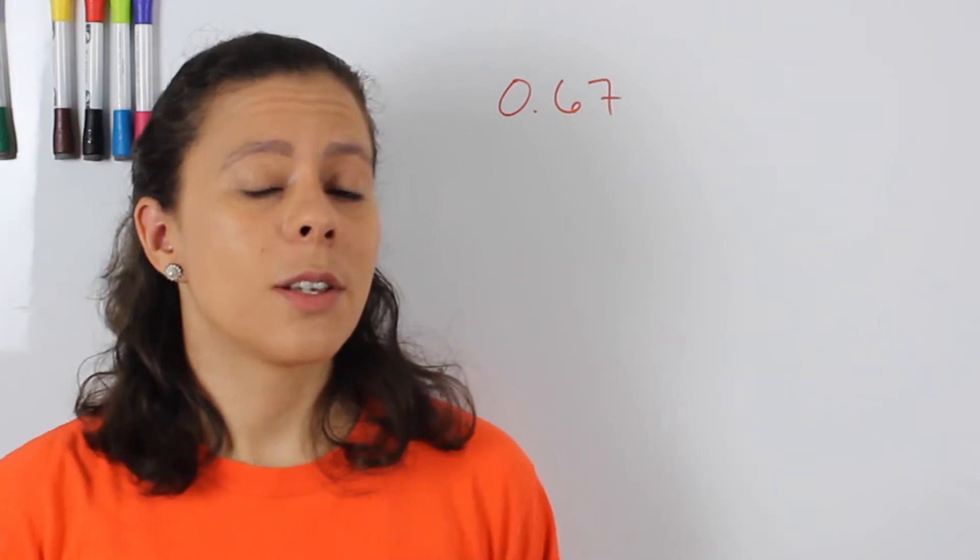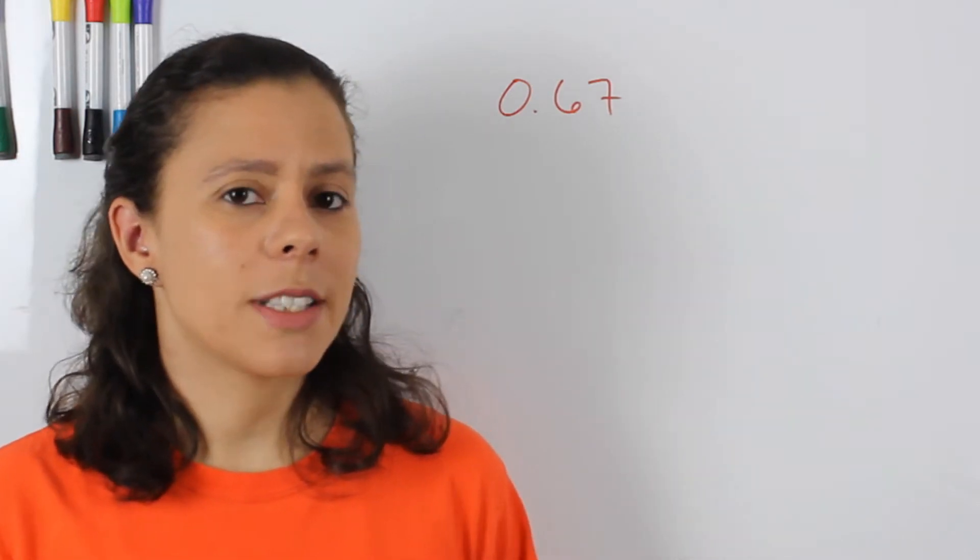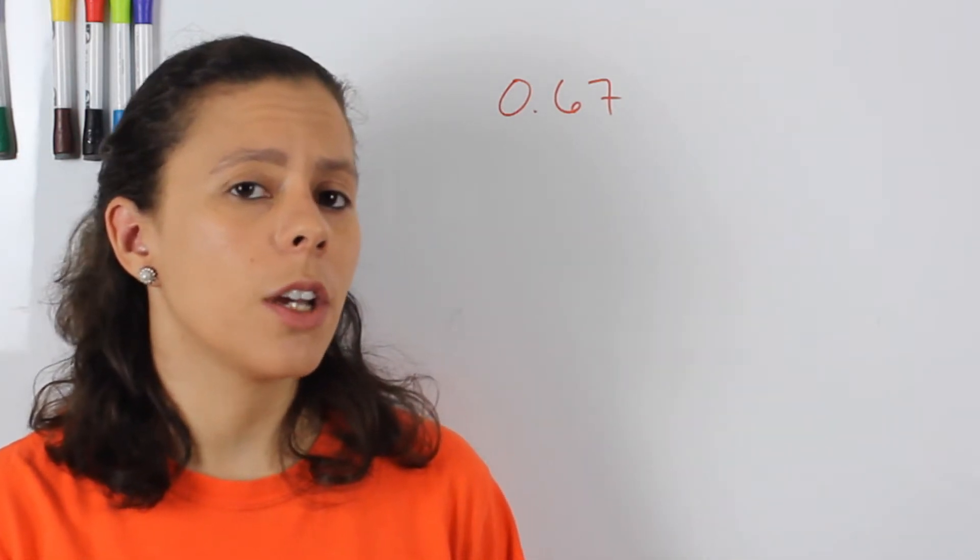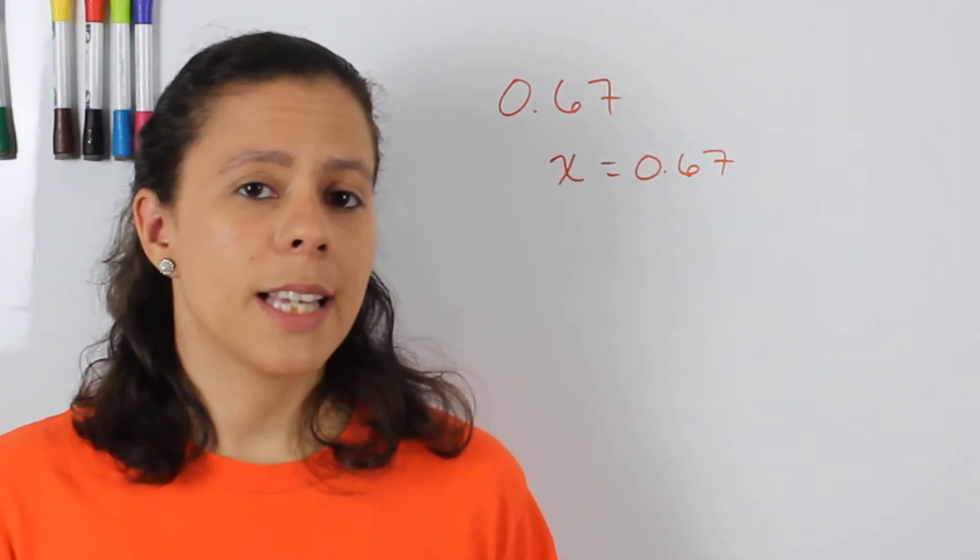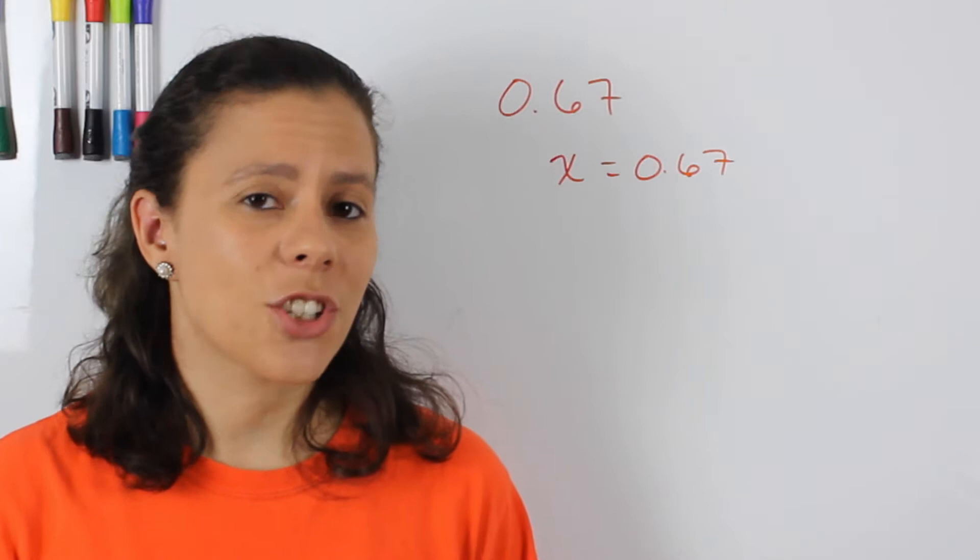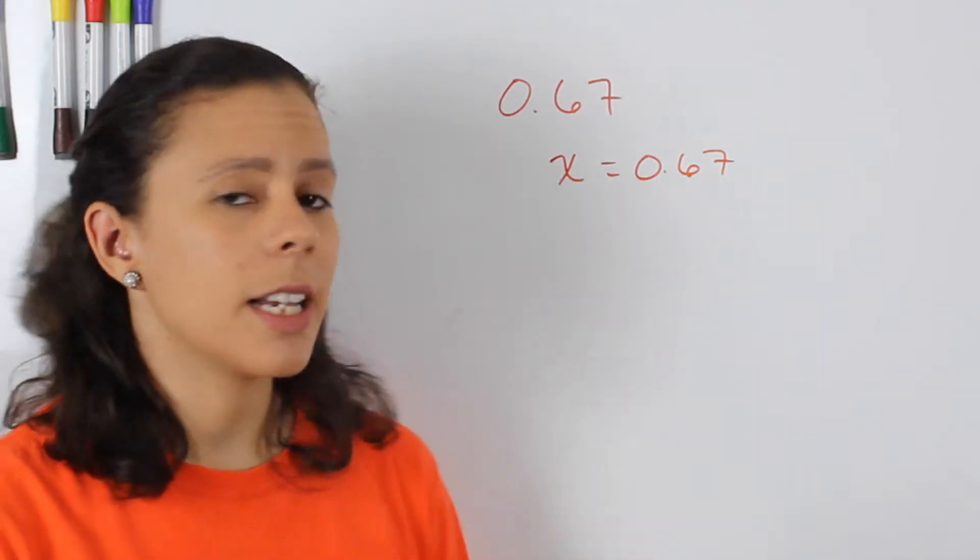Now what is .67? Very simple. Similar to what we did in the other video, we're going to make x equal to .67 because the x is going to represent the fraction that that .67 is going to be.